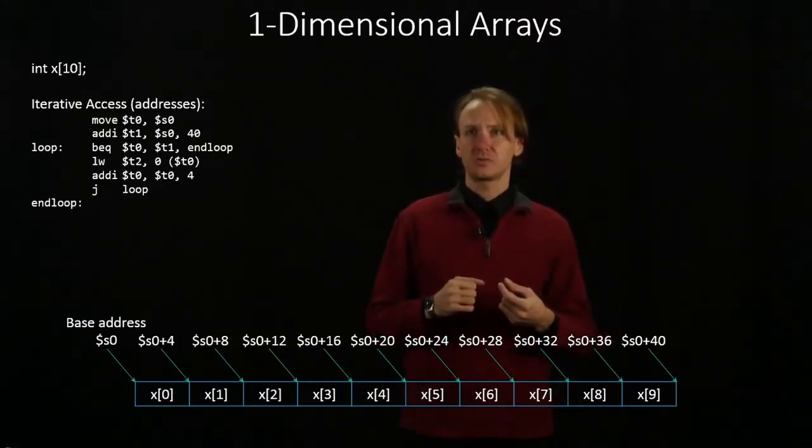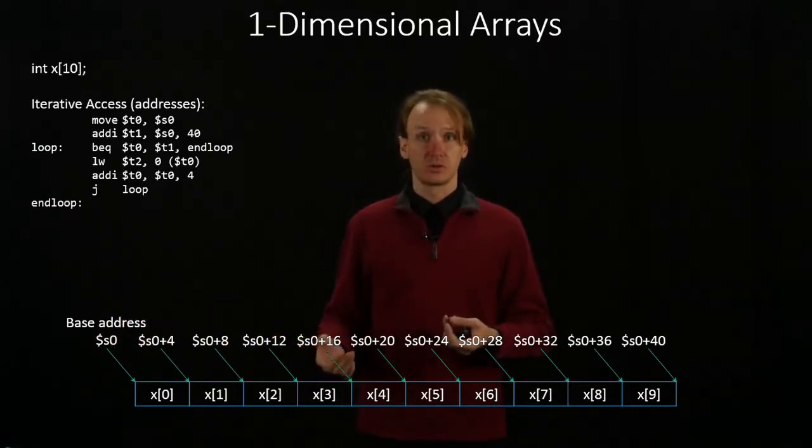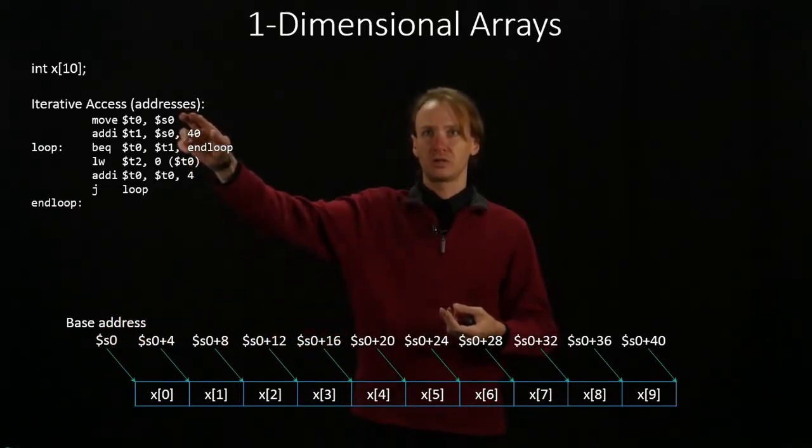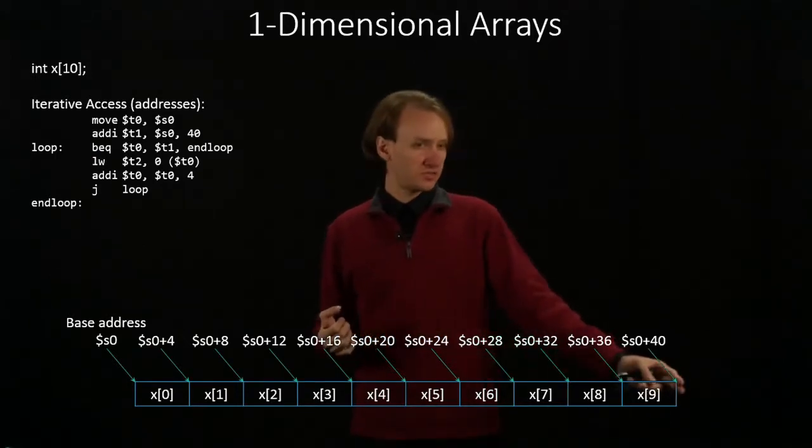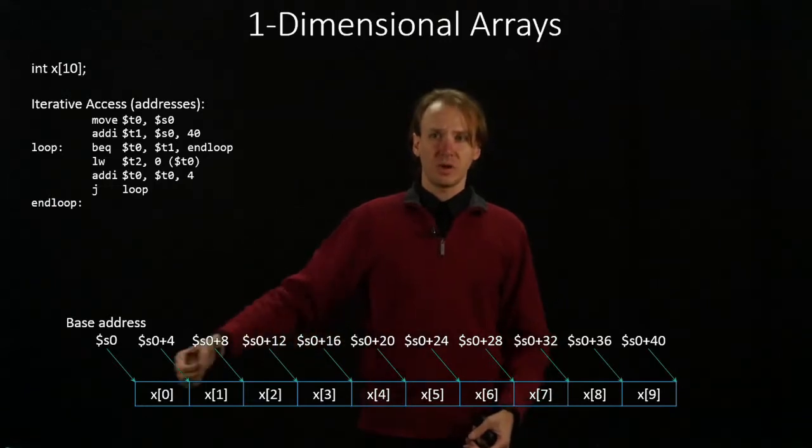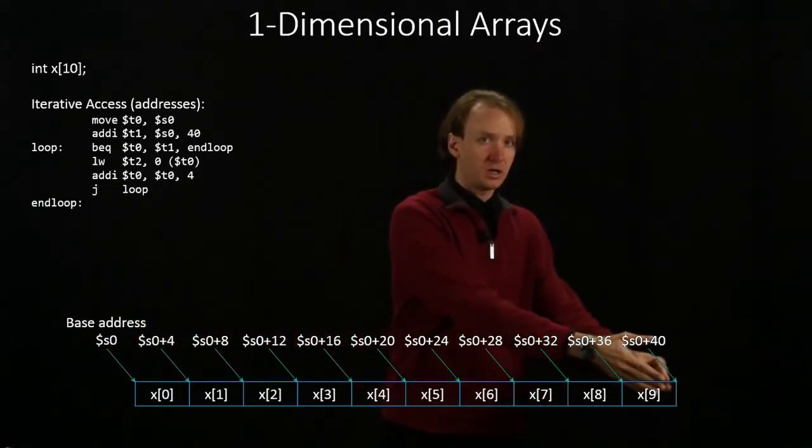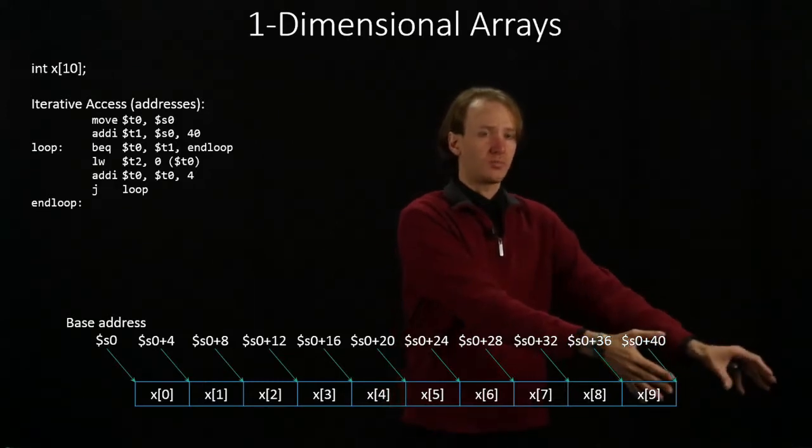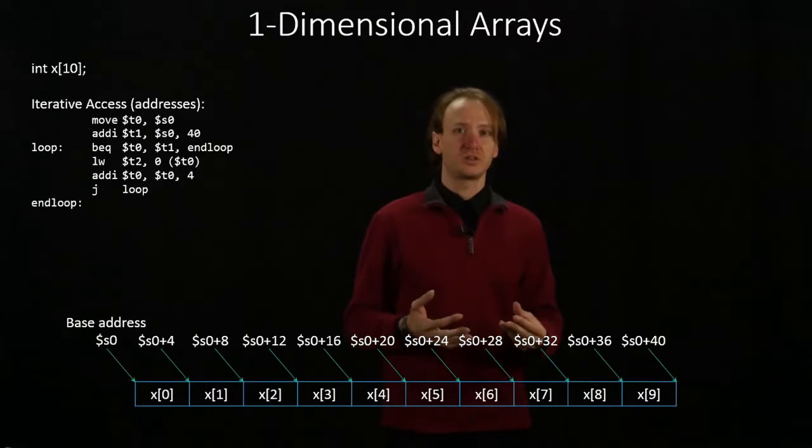So I'm going to start by using my base address as the counter. So I'm putting s0 into t0, and then I'm going to put s0 plus 40 in as t1. Once my counter has reached s0 plus 40, I know it's gotten to the end of the array. I don't want to process anything out here. So that will be my termination condition for the loop.